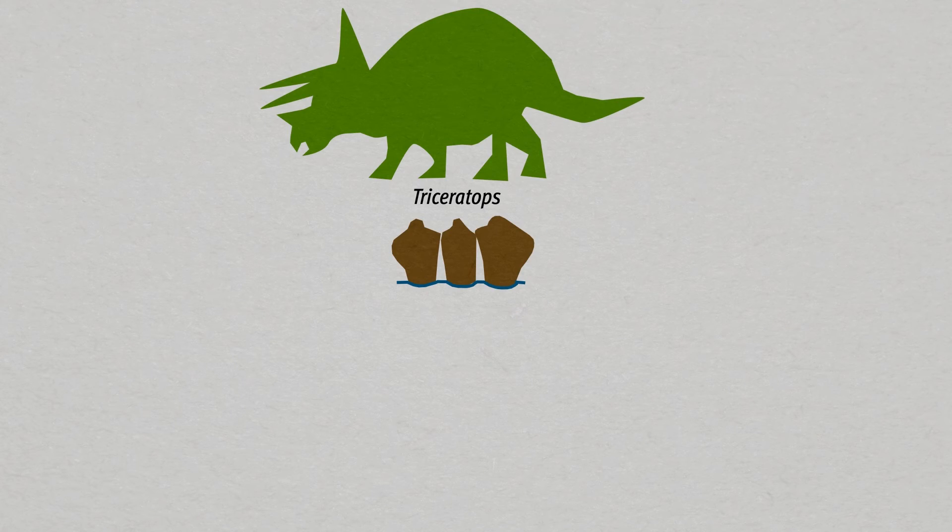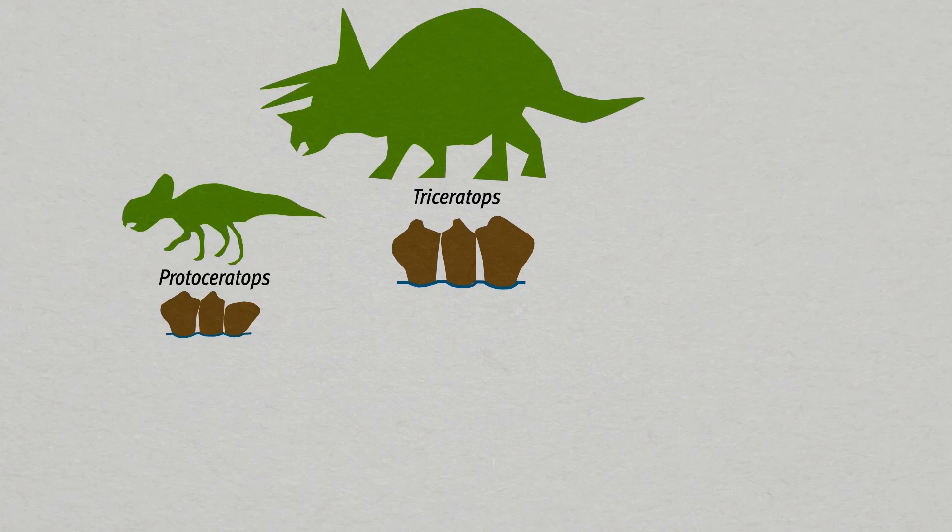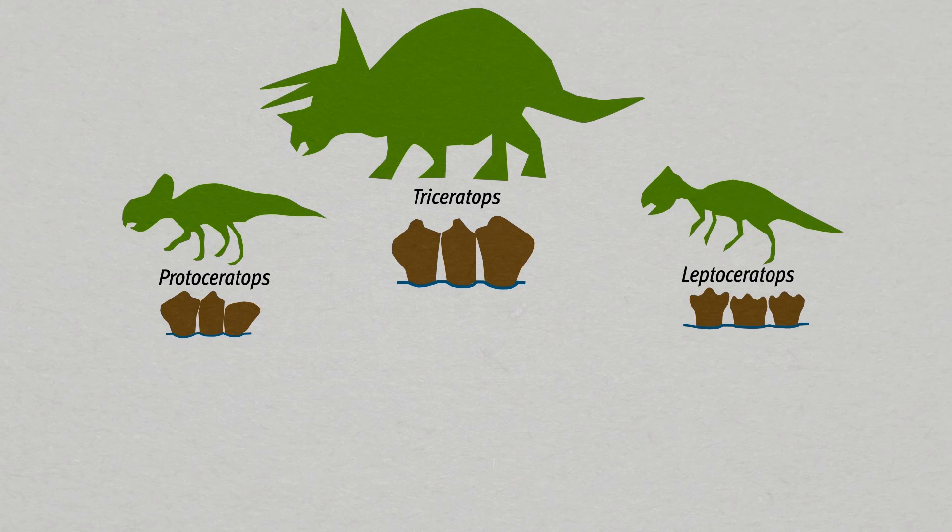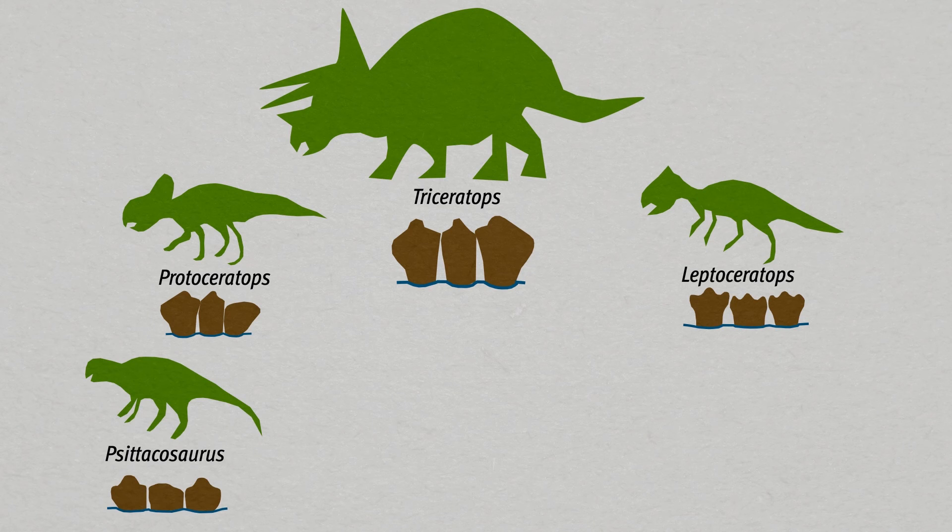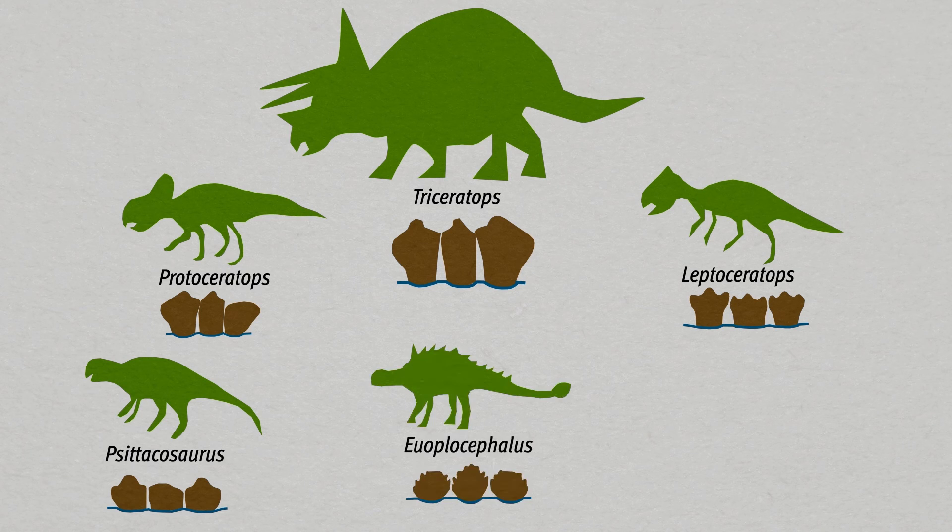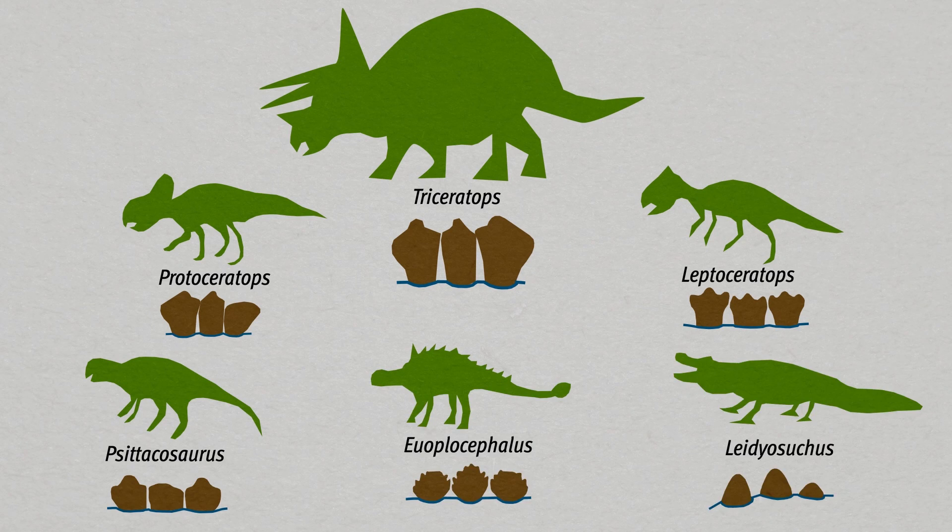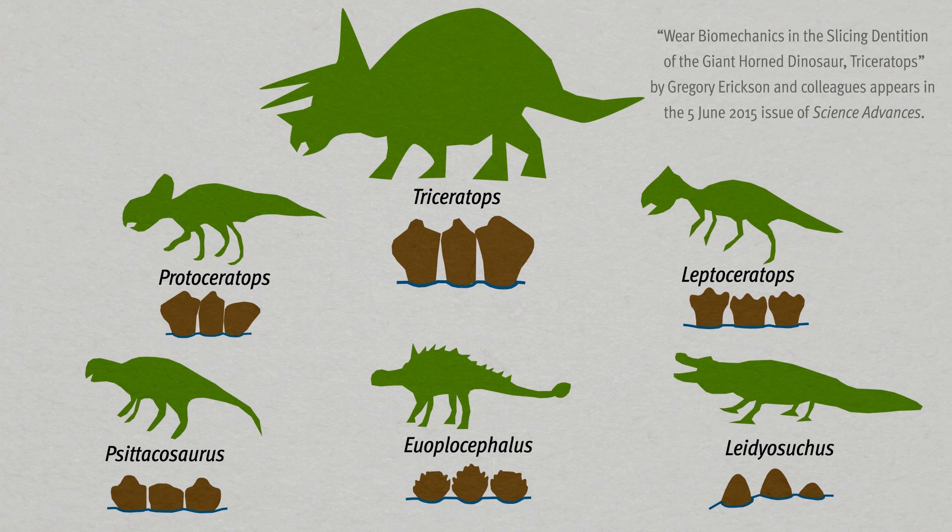Our theory is that this ability to chew allowed them to feed upon plants that other dinosaurs or other animals couldn't access, and it allowed them to process these very tough plants and different types of plants and basically allowed them to out-compete other dinosaurs.